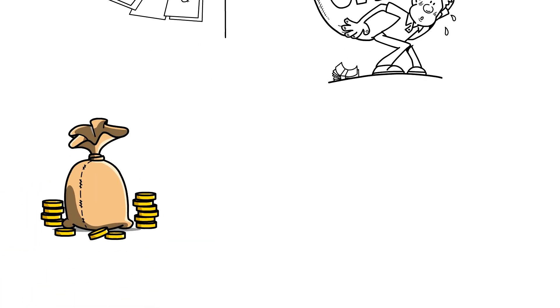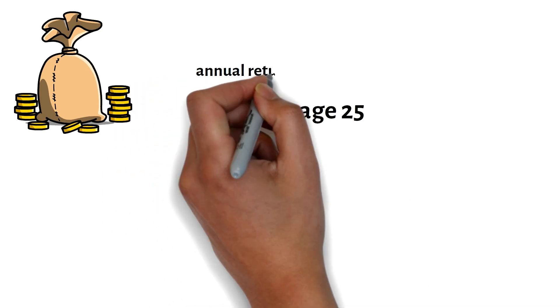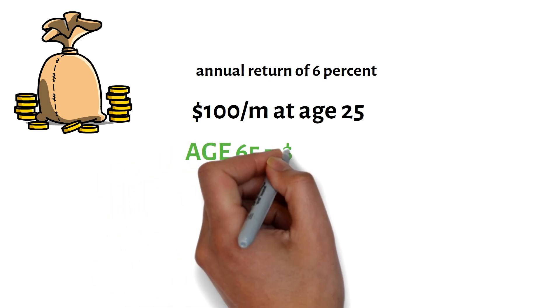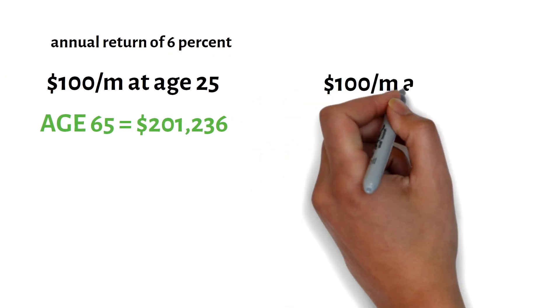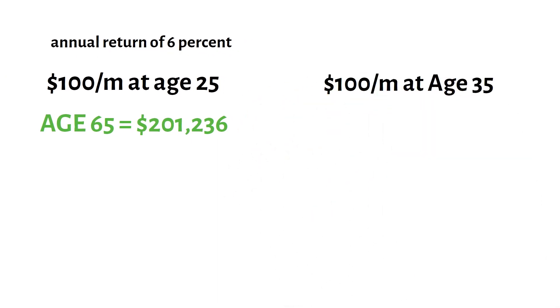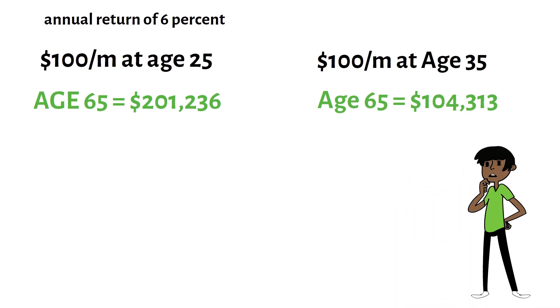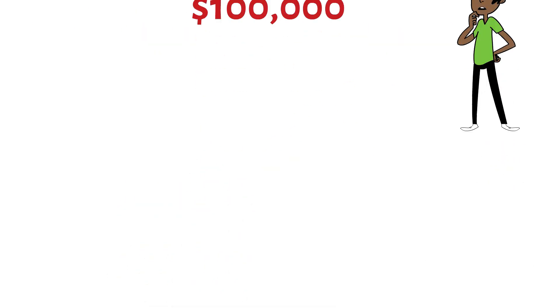Consider this example. If you start saving $100 a month at age 25, assuming an annual return of 6%, by the time you reach age 65, you'll have $201,236. If you wait until age 35 to start saving the same amount, you'll only have $104,313 by age 65. That's a difference of almost $100,000 just by starting 10 years earlier.